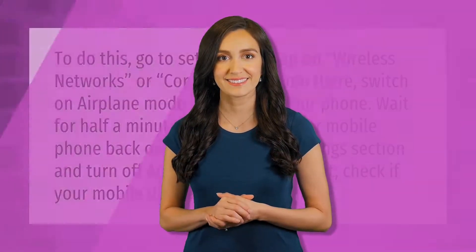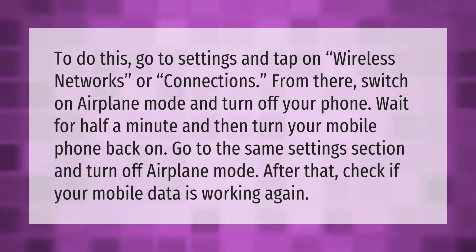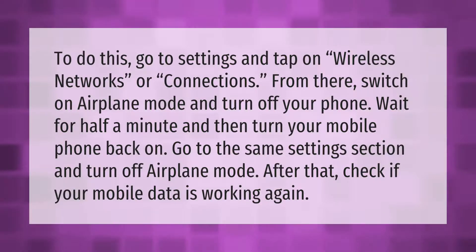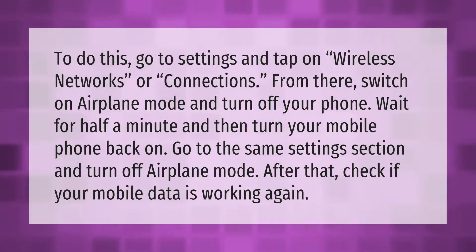To fix mobile connectivity issues, go to Settings and tap on Wireless Networks or Connections. From there, switch on airplane mode and turn off your phone. Wait for half a minute, then turn your phone back on, go to the same settings section, and turn off airplane mode. After that, check if your mobile data is working again.